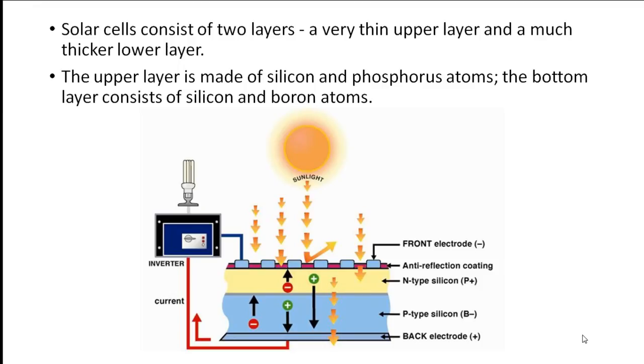The upper layer is made up of silicon and phosphorous atoms. The bottom layer is made of silicon and boron atoms. When sunlight strikes the silicon atoms in solar cells, it jars the electrons out of the atoms in both layers. These electrons flow into the metal contacts located on the front of the solar cells.